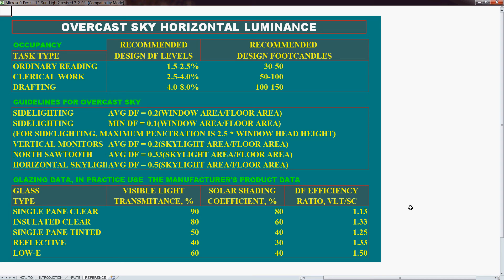Hello. This video is about a spreadsheet called Sunlight. We're looking at the reference screen, which corresponds to table 14.2 in Meeb, recommending daylight factor levels. Daylight factor is the ratio of natural light received on a task to that available on a horizontal surface outside.